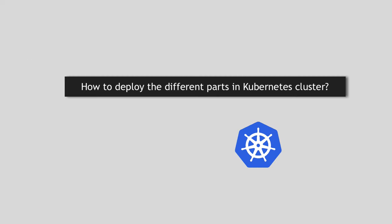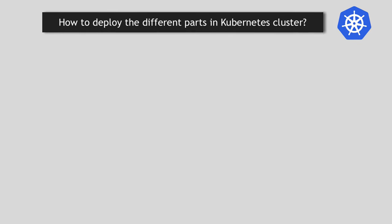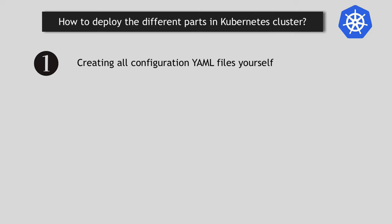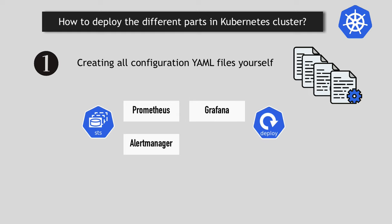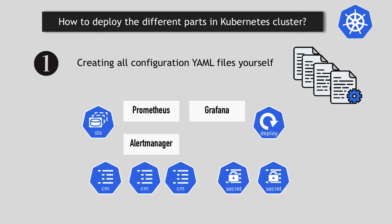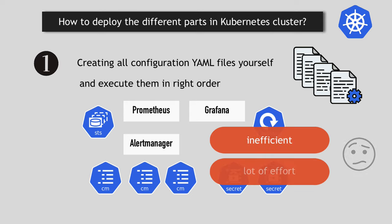So how do you go about deploying it in a Kubernetes cluster? There are actually several different ways of doing that. The first one is putting together all the configuration files you need for all the parts — for each component of the Prometheus monitoring stack — basically creating those YAML files for the Prometheus stateful set, alert manager, Grafana deployments, all the config maps and secrets that you need, and then executing them in the right order because of the dependencies.